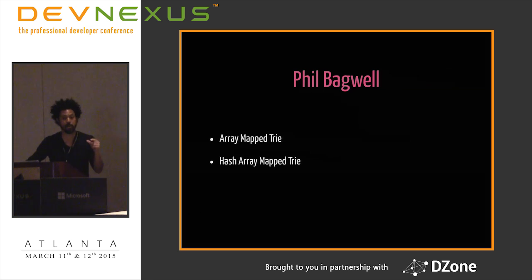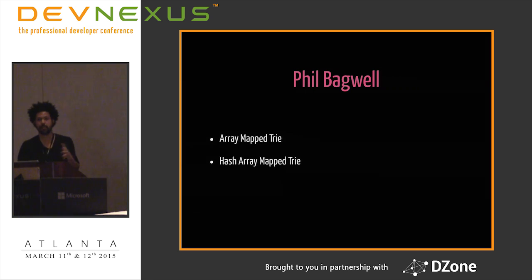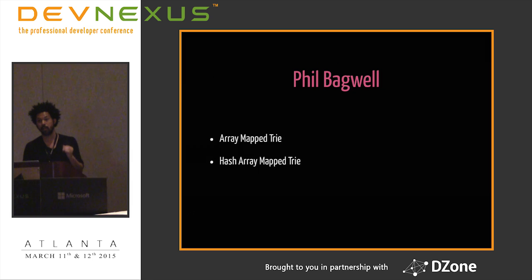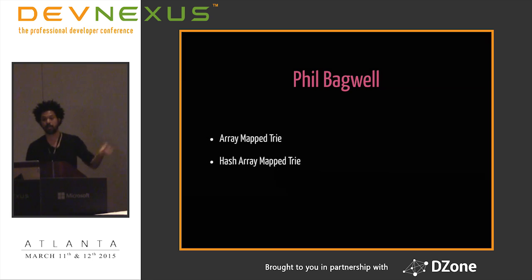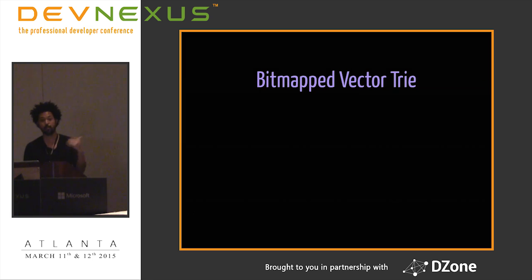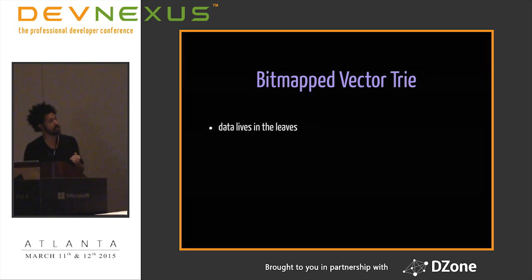Phil Bagwell invented the ArrayMappedTrie and the HashArrayMappedTrie around 2000-2001. Rich Hickey, developing Clojure, wanted to write lock-free concurrent programs on the JVM — and the only way to do shared-memory concurrency without locks is if everything is immutable. To this day, people building production systems in Clojure write no locks because all data structures moved between threads are persistent. Rich took Bagwell's mutable version, combined it with Okasaki's ideas, and came up with an immutable variant called the BitMappedVectorTrie, now ported to Scala, Haskell, C++, Java, Erlang, and JavaScript.